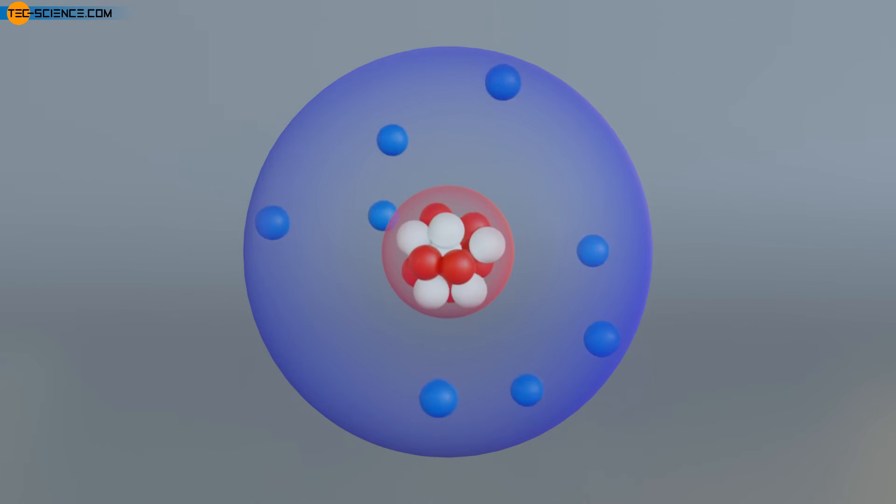In the electrically neutral state, there are just as many positively charged protons in the nucleus as there are electrons in the shell. The electric charge of an electron and a proton is identical in magnitude, but with the opposite sign. From a macroscopic point of view, the electrostatic effects thus cancel each other out. In this state, the particle is electrically neutral.